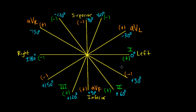It's essential that you know all of these leads — where their positive and negative poles are and at what degrees — because that will help us with a variety of ECG interpretation tasks discussed in another video, such as calculating the mean QRS axis. That concludes this video on ECG limb leads and the frontal plane.